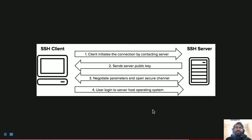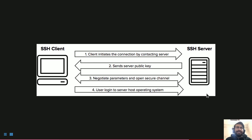The SSH communication works as follows: the user types ssh followed by the SSH server address. The client sends a request to the server, which sends back its public key. The client and server then negotiate the parameters of the SSH connection — such as compression and encryption scheme. Once everything is negotiated, the session starts and the user can send commands to the SSH server and log into the operating system.